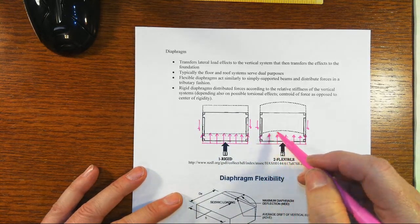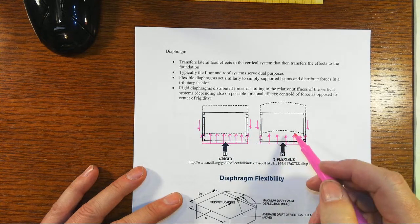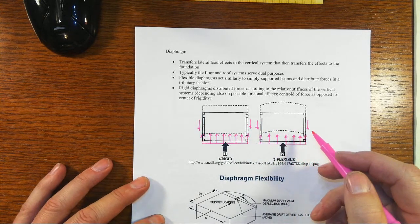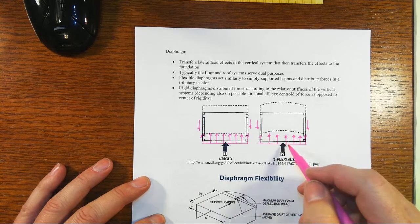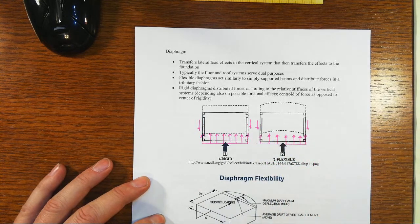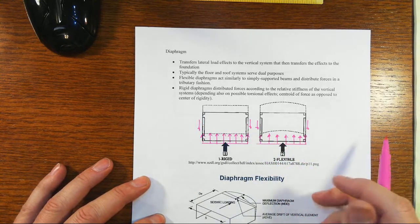Whereas in the case where we have a flexible diaphragm, then the diaphragm is going to operate as though it's a simply supported beam, and so WL over 2 going to each side is going to be the way you would model multiple spans.